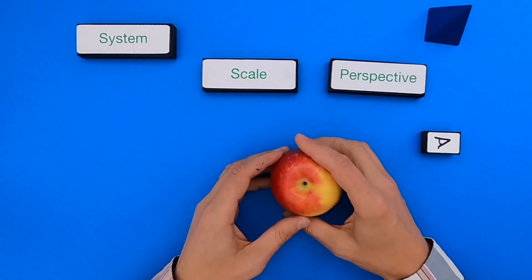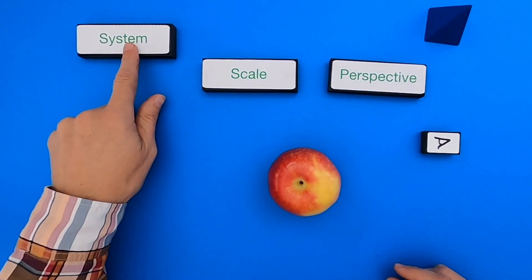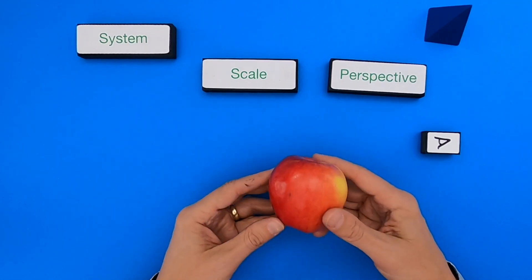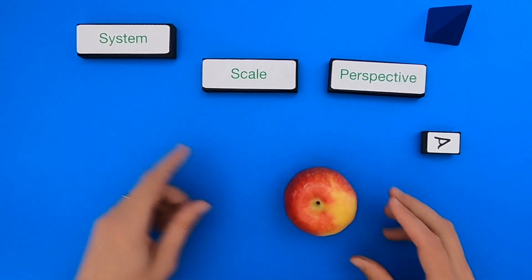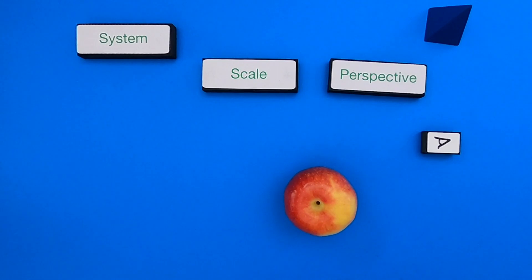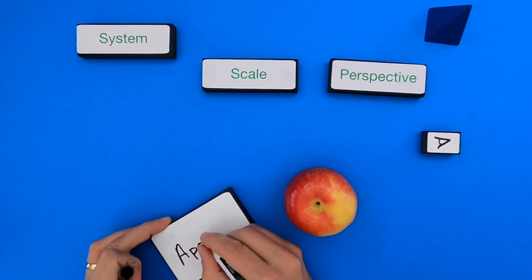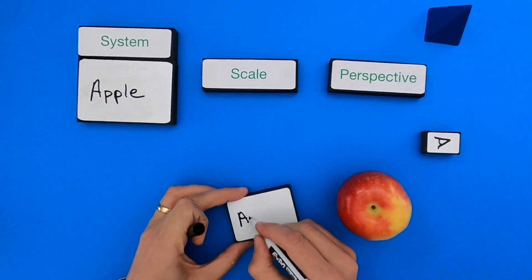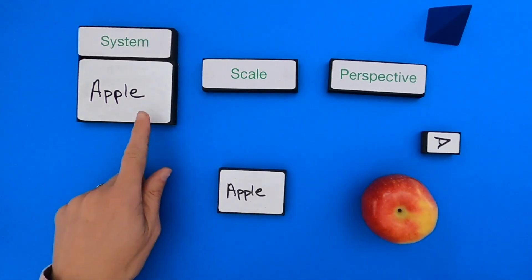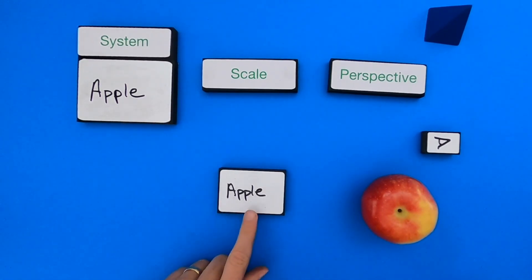Okay, for the second example, I'd like to have you try it. We're going to look at different scale within systems, including an apple. So let me define what the system is and get us started on the scale. So we've defined the system as the apple. I moved it over here so we have room above and below the apple, so we can start thinking about scale.